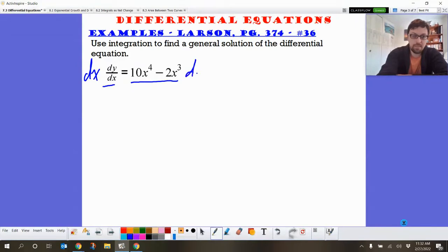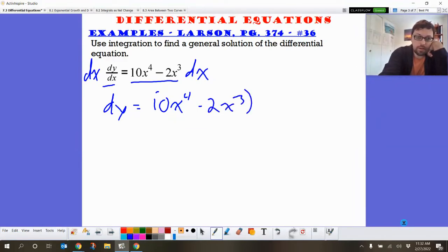So we just, easy peasy, multiply both sides by dx. So then we have dy equals 10x to the fourth minus 2x cubed, and that's all being multiplied by dx.